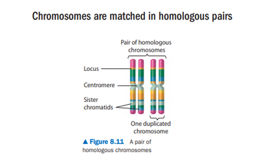In humans, a typical body cell called a somatic cell has 46 chromosomes. If we use a microscope to examine a human chromosome in metaphase of mitosis, we see that the chromosomes, each consisting of two sister chromatids, can be arranged into matching pairs. A human cell at metaphase contains 23 sets of duplicated chromosomes. Other species have different numbers of chromosomes, but these do usually occur in matched pairs.